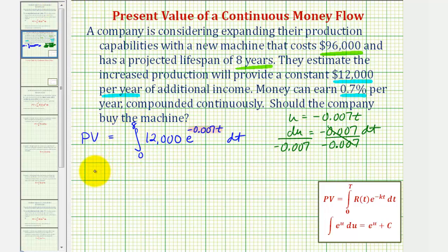So we'll go ahead and factor out the 12,000. And then writing this in terms of u, we'll have to divide by this constant here. Let's go ahead and factor that out. But now this would just be e to the u. Well, the integral of e to the u is just e to the u. So now we have 12,000 divided by negative 0.007. And the entire derivative is e to the power of negative 0.007t.